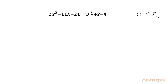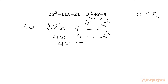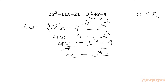Let us get started with our substitution straight away. I will consider cube root of 4x minus 4. Let us write cube root of 4x minus 4 equal to u. Now we will take power 3 on both sides, so cube root and cube will cancel out. We will get 4x minus 4 equal to u cubed, so 4x equals u cubed plus 4. Dividing both sides by 4 gives x equal to (u cubed plus 4) over 4. Let us call this equation number 1.